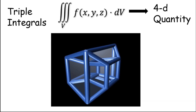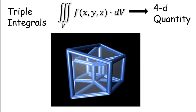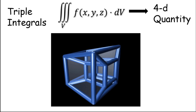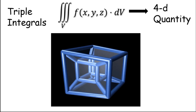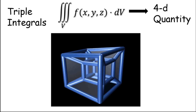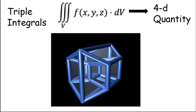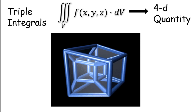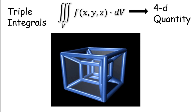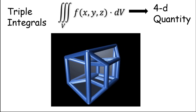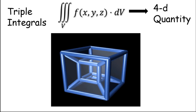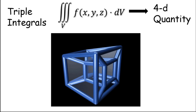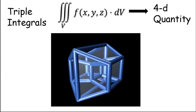So if we do a similar thing for triple integrals, what we get is a 4D quantity. But that is not what we do triple integrals for — we don't deal with 4D all the time, unless you are an astrophysicist. So let's look at a better way to think about it.